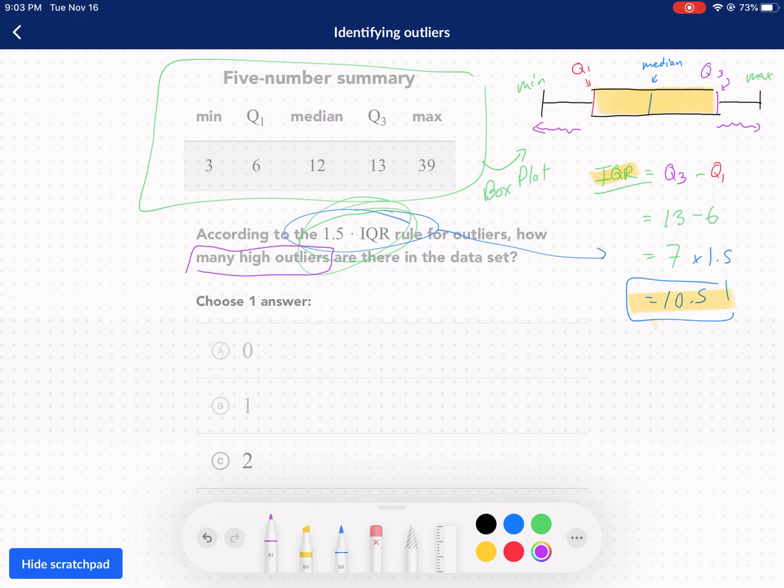So if it's asking me how many high outliers there are, what I can do is take my Q3, that's the edge of the box essentially, and I add the 1.5 times the IQR. This will tell me my upper limit. I like just thinking about it, I think it's easier than memorizing this formula. So in this case my upper limit is 13, and I know I can go 10.5 in either direction. So from my Q3 I can go 10.5 up to the right, and when I add those two things I get 23.5.